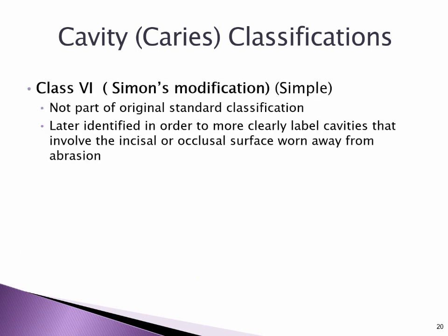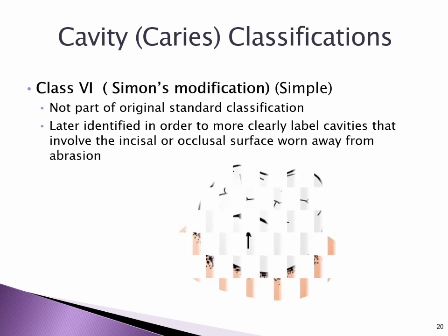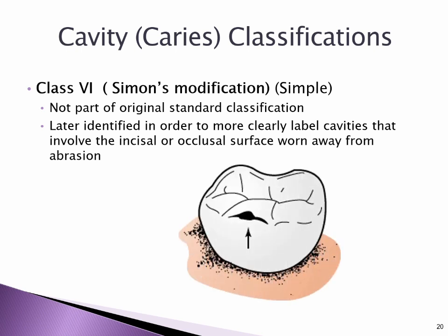Class VI (Simon's modification, Simple): not part of the original standard classification. Later identified in order to more clearly label cavities that involve the incisal or occlusal surface worn away from abrasion.